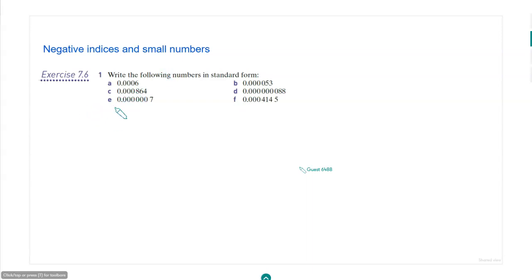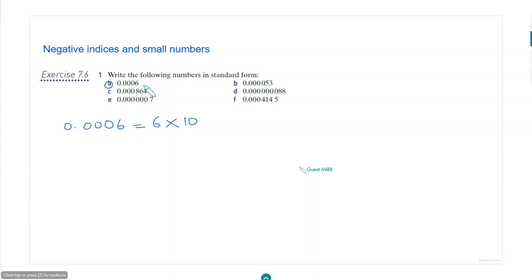So for example, to write the first one in standard form: 0.0006 will be how much in standard form? 6 times 10 to the power of negative 4. 1, 2, 3, 4 — yes, yes, yes.